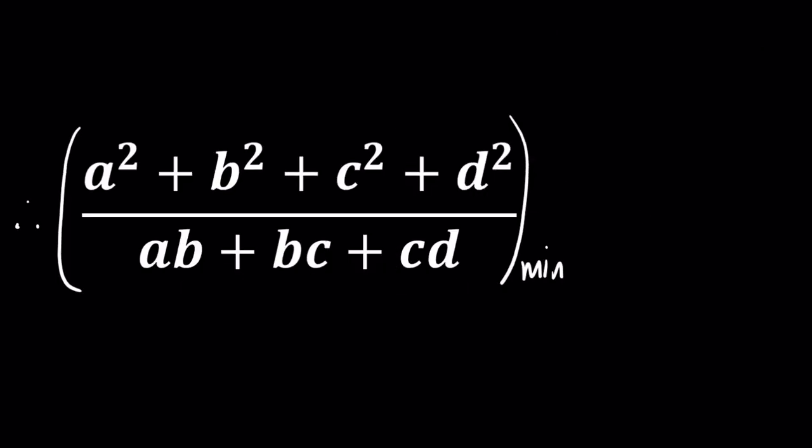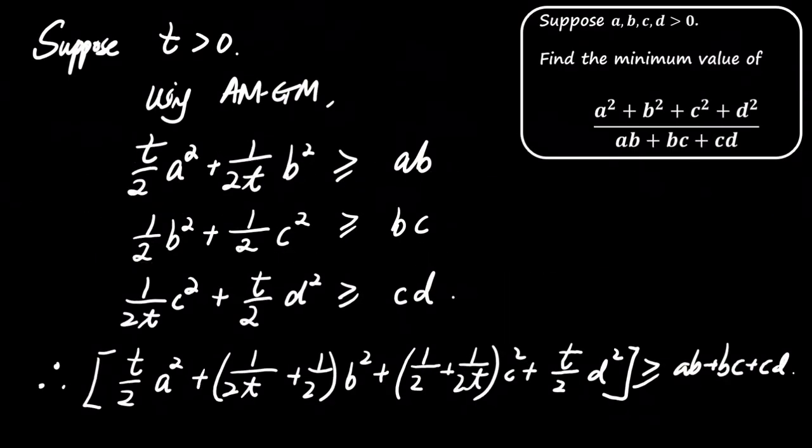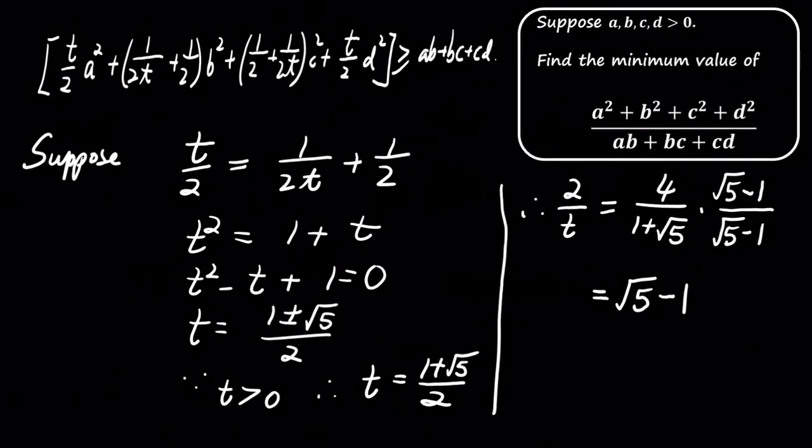Therefore, the minimum value of this expression is indeed the square root of 5 minus 1. Thank you for watching, and I hope you found this solution insightful. Don't forget to like, share, and subscribe for more problem-solving videos.